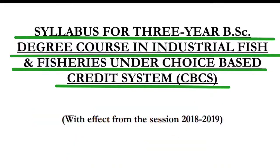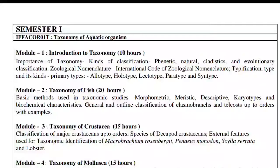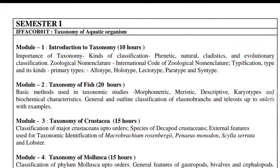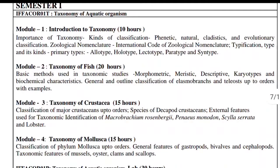Semester 1 syllabus: Taxonomy of Aquatic Organisms. Module 1 covers introduction of taxonomy, importance of taxonomy, kinds of classification — phenetics, natural, cladistics and evolutionary classification — and nomenclature including the International Code of Zoological Nomenclature.